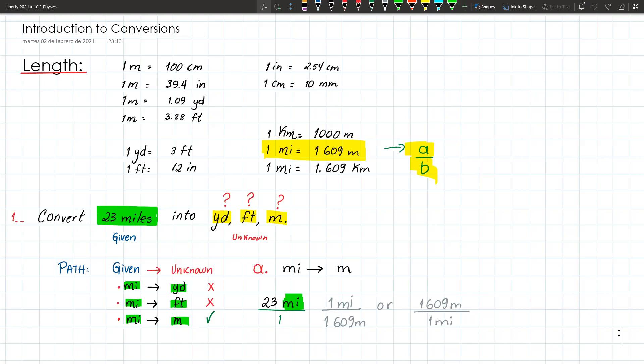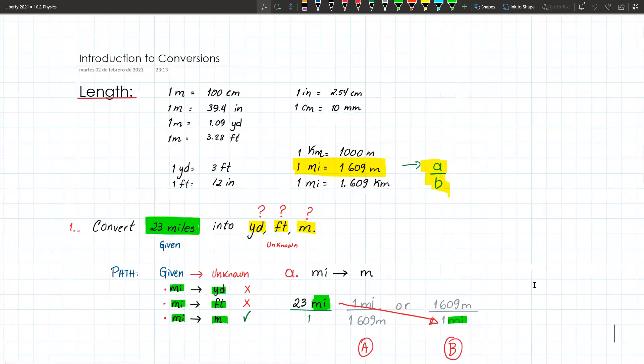So what conversion factor are you going to be using? You need to choose the one that has the units that you need to cancel in opposite positions, top and bottom. Which one has the miles in opposite positions, A or B, being A the first option and B the second option? In B, miles are below, they are in opposite positions, which means that is the conversion factor in that shape. In that way you're going to use it. So this conversion factor will be 23 miles times, like that. In this way you can cancel the miles and the remaining unit is going to be the final answer.